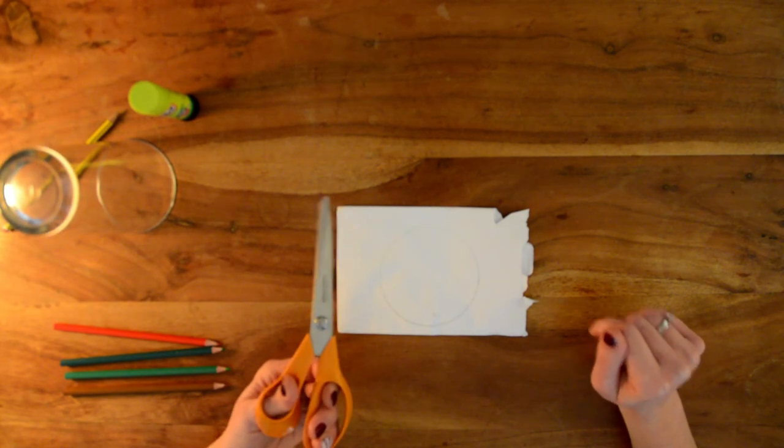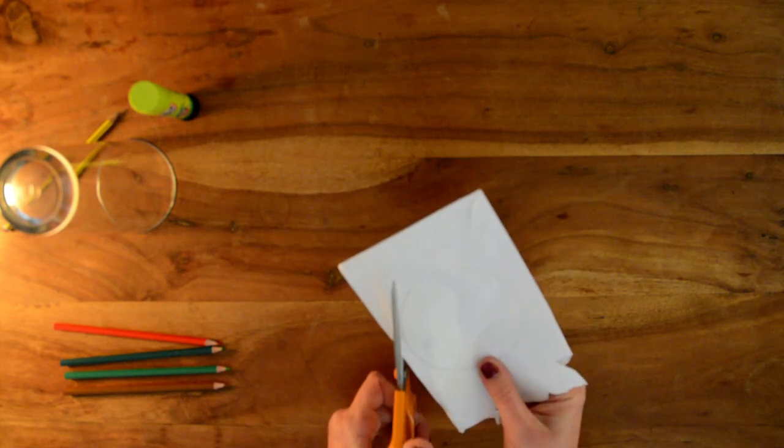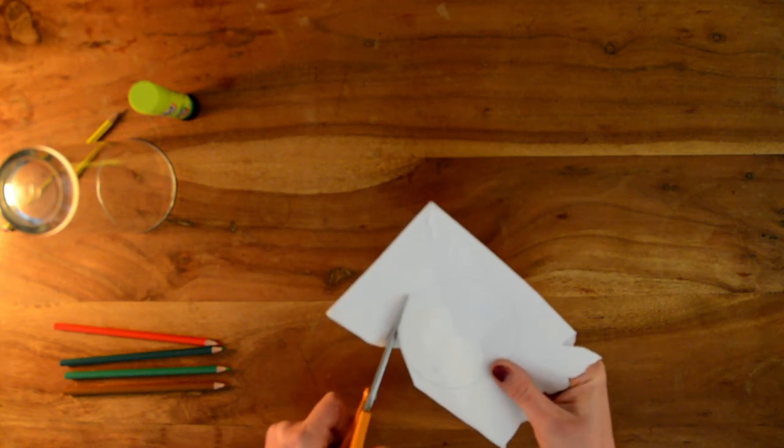Now carefully, you're going to cut around to make a circle. This will be our bauble shape.